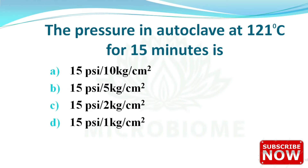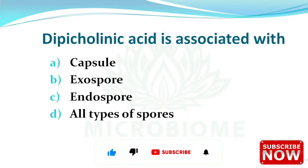Next: the pressure in an autoclave at 121°C for 15 minutes is option D — 15 psi or 1 kg per cm². An autoclave is a machine that uses steam under pressure to kill harmful bacteria, viruses, fungi, and spores. It works on the principle of moist heat sterilization.